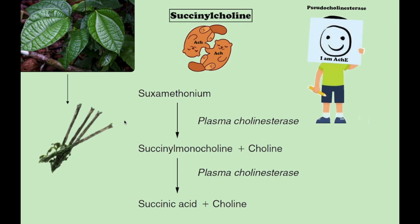Succinylcholine is a nicotinic agonist and depolarizes the neuromuscular end plate. Suxamethonium mimics the action of acetylcholine by attaching to the nicotinic acetylcholine receptor and causing membrane depolarization. However, because its hydrolyzing enzyme — plasma cholinesterase, or pseudocholinesterase — is not present at the neuromuscular junction, its duration of action is longer than that of acetylcholine.